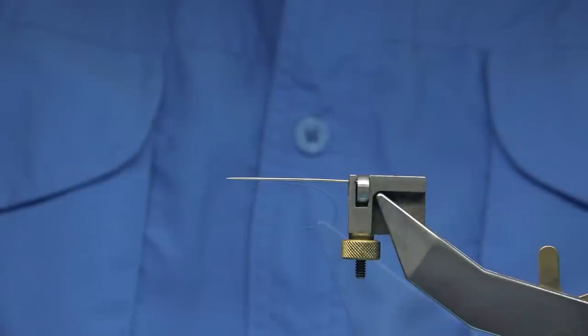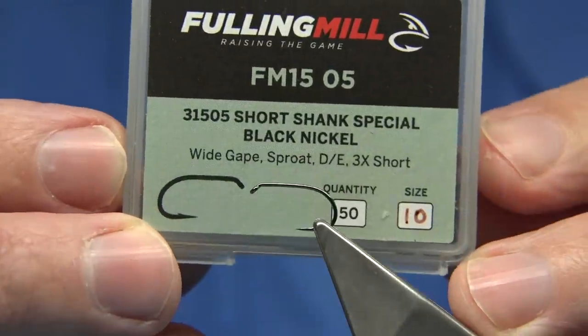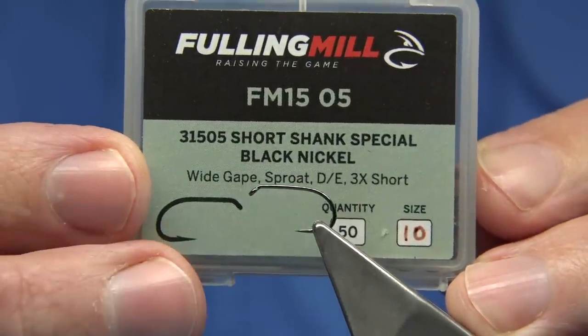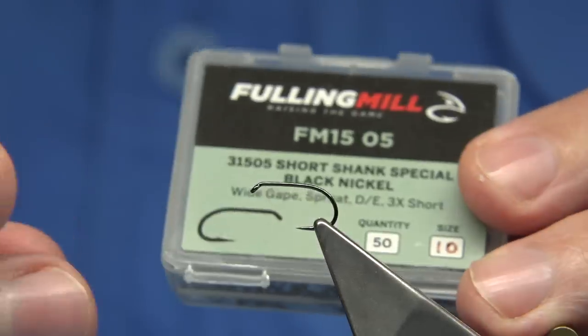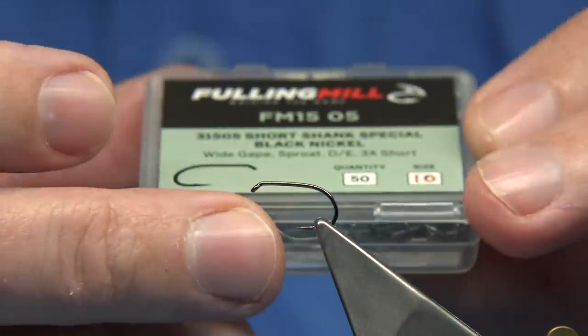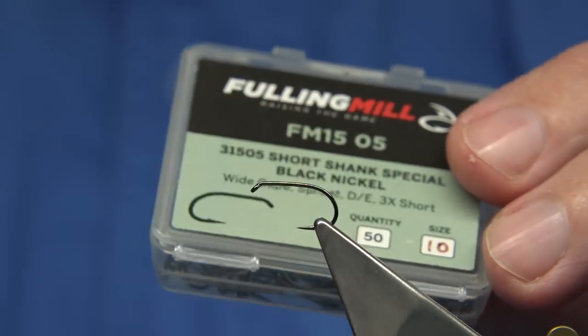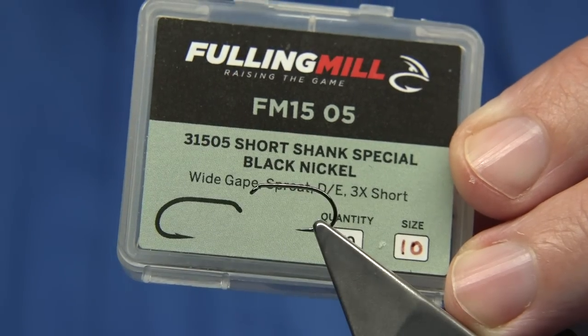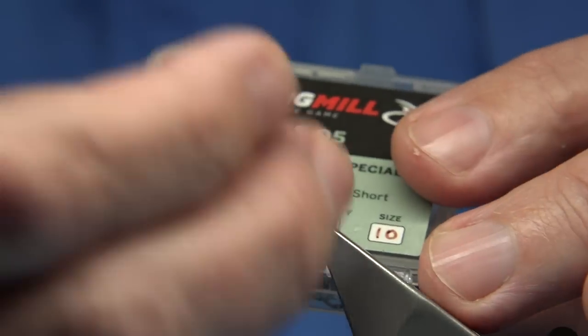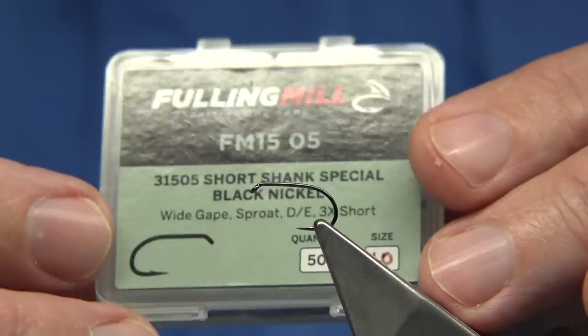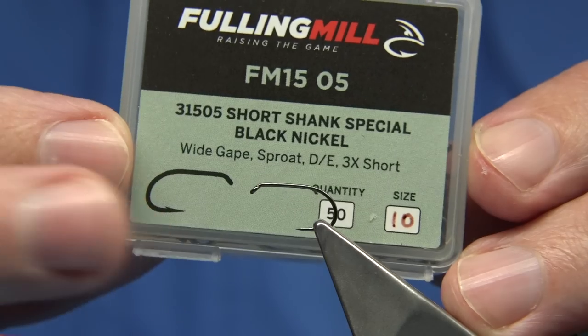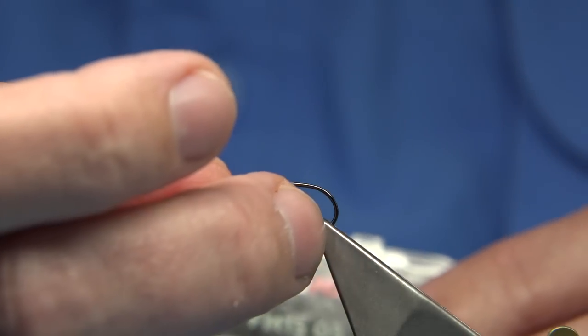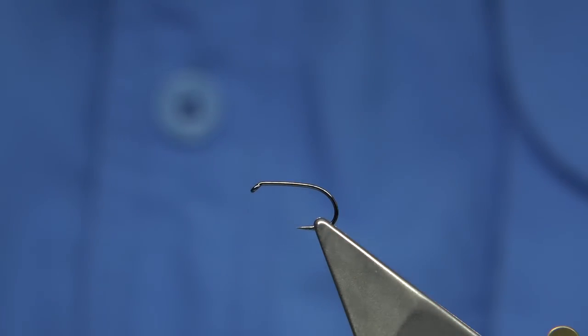Now we're ready to tie the fly itself after forming the body. The choice is up to yourself. I'm using this one here, this is the Fulling Mill hook, it's a size 10. It's what they call a short shank special in black nickel. Black will suit the fly because the damsel's kind of black and blue type color. You could use any hook, a curved hook like a grub shape hook, medium to light wire would work. I like a good gape, especially on a detached bodied fly. I find it hooks much better. The gape's a size 10 equivalent and the shank's equivalent to a size 12.